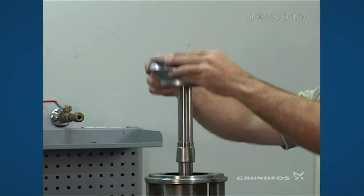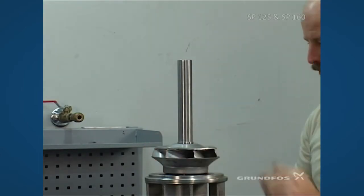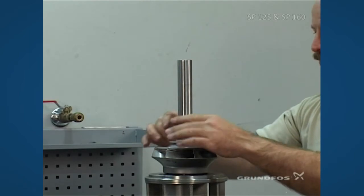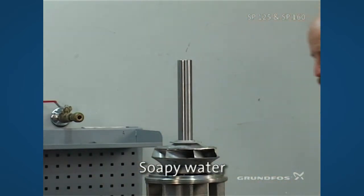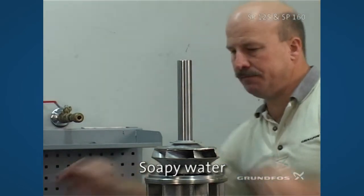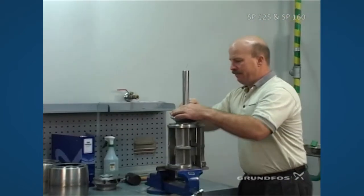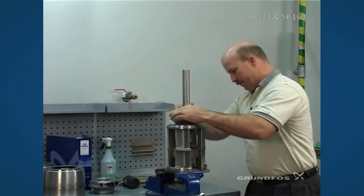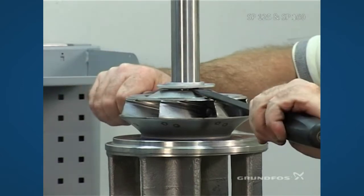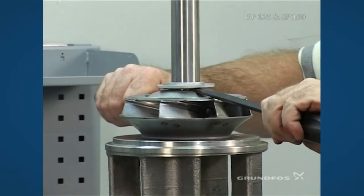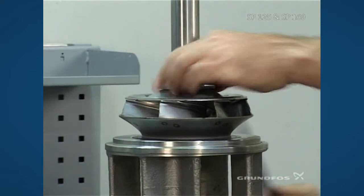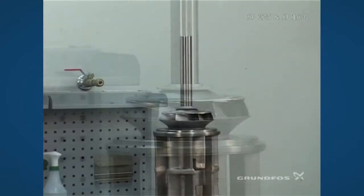Then you can add the impeller and the split cone nut. We want to make sure we have soapy water up where it seats and then firmly seat it all the way down. At this point, we want to take our two screwdrivers and make sure that the cone is pulled all the way up in through the impeller.